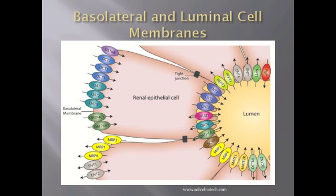Given that the specific target of chloroform is the renal epithelium, we can see that in order to reach its target, the toxin must cross both basolateral and luminal cell membranes.